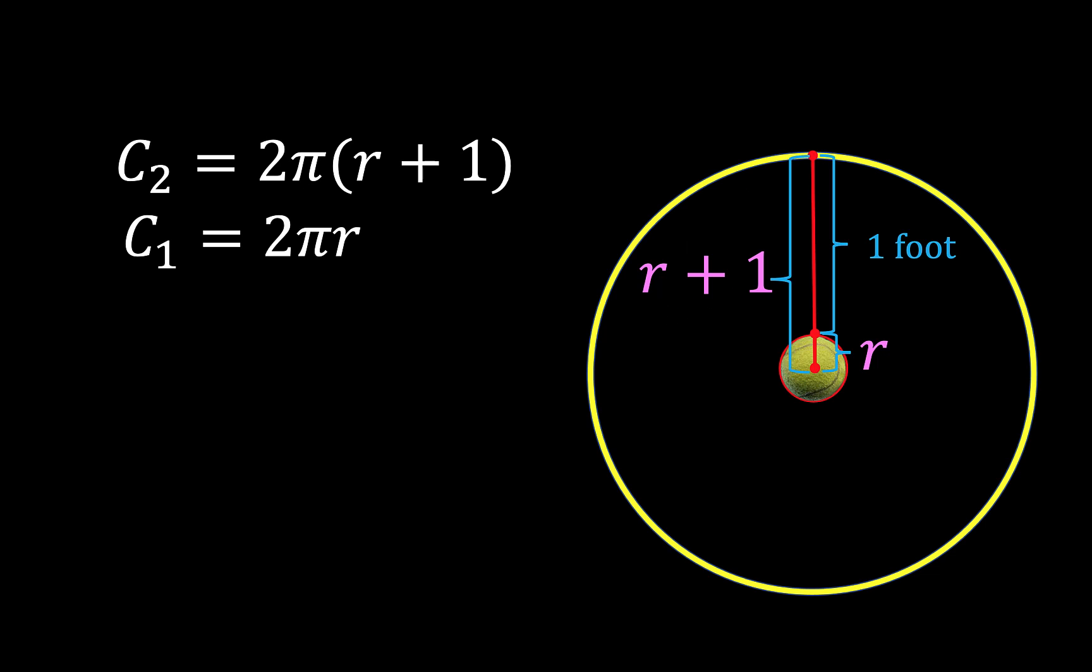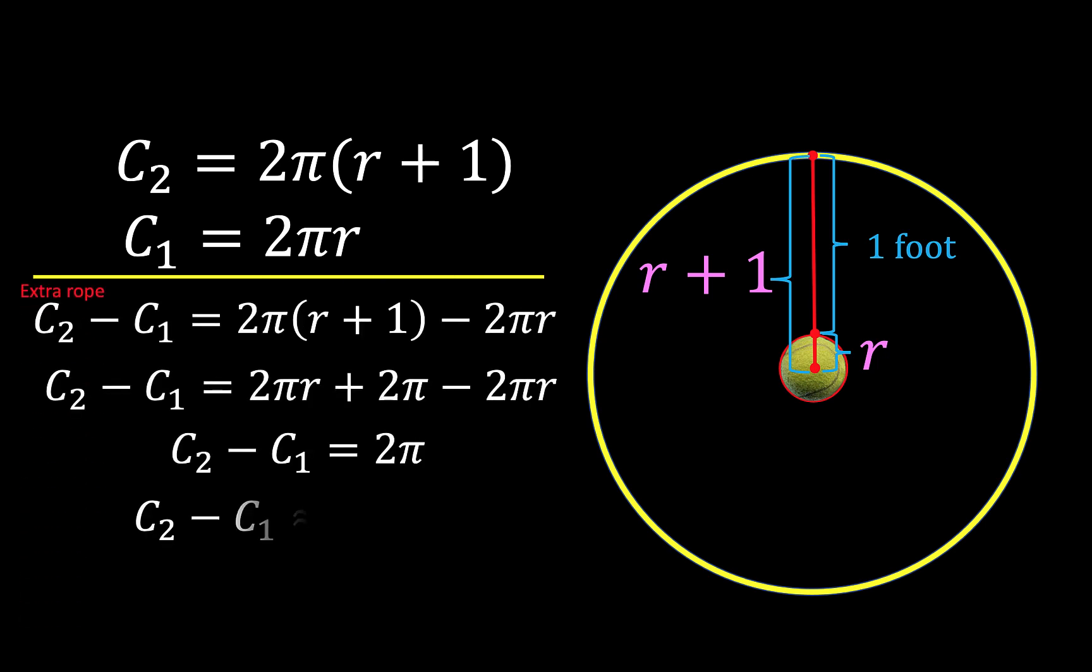And the same as in the first case, we can get the length of the extra rope by subtracting C₂ minus C₁ and simplifying, we also arrive at 2π, which is approximately 6.28 feet for the length of the extra rope between the circumference of the tennis ball and the circumference of this yellow circle.